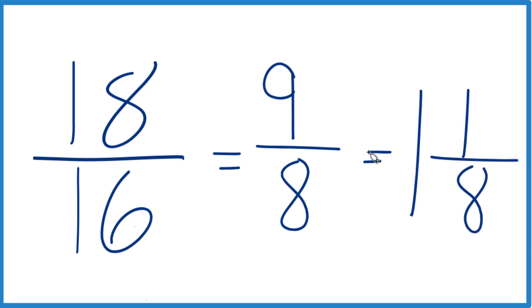So 9 eighths, that equals 1 and 1 eighth. So all of these are equivalent here, 18 sixteenths, that also equals the mixed number 1 and 1 eighth. And you can check that because 1 times 8, that's 8, plus 1. 8 plus 1 gives you the 9, and we just keep the denominator the same.